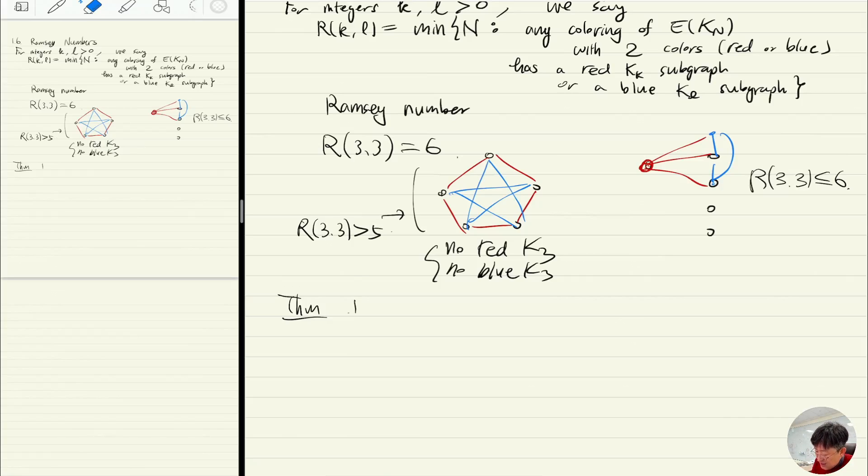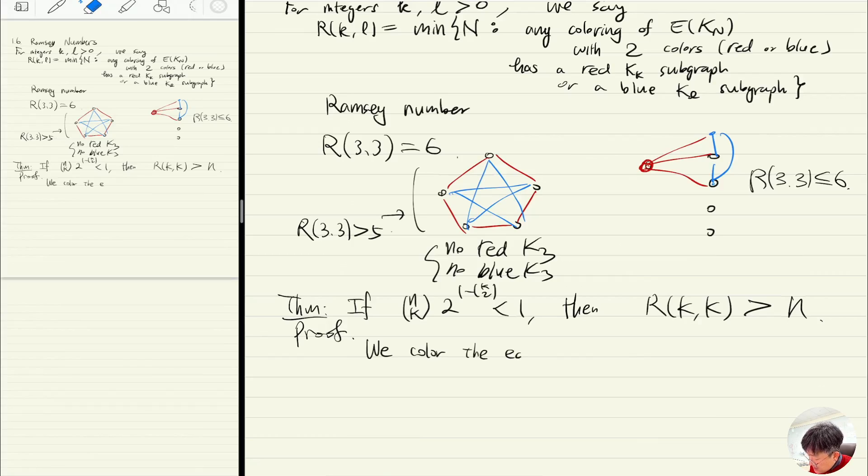I'm going to show you a technique to show the lower bound. The technique is the following: if n choose k times 2 to the 1 minus k choose 2 is less than 1, then the Ramsey number R(k,k) is bigger than n. If you have integers n and k satisfying this inequality, then the Ramsey number is big.